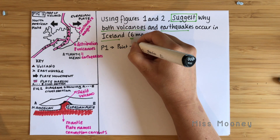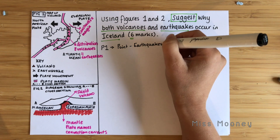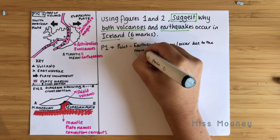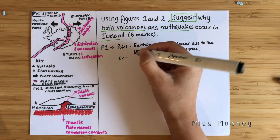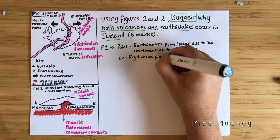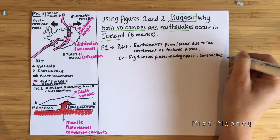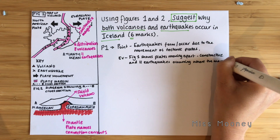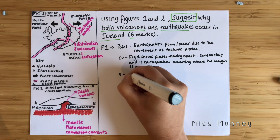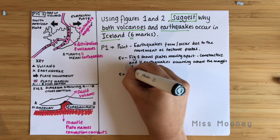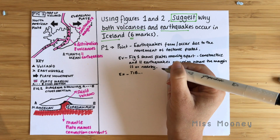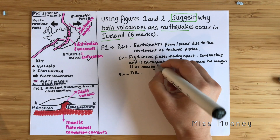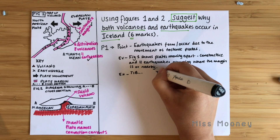Our first paragraph will focus on earthquakes. The point is that earthquakes occur due to the movement of tectonic plates. Our evidence, using figure one, shows that plates are moving apart — these are constructive margins — and there are eleven earthquakes occurring near that margin in Iceland. Tick those off once written down to make sure you're on track. Then explain the point clearly and logically: why the earthquake is occurring, using 'this is because' and 'this means that,' explaining those processes and key terms.